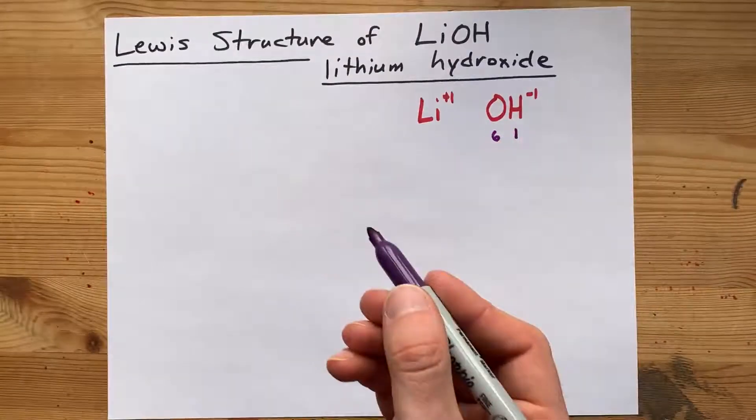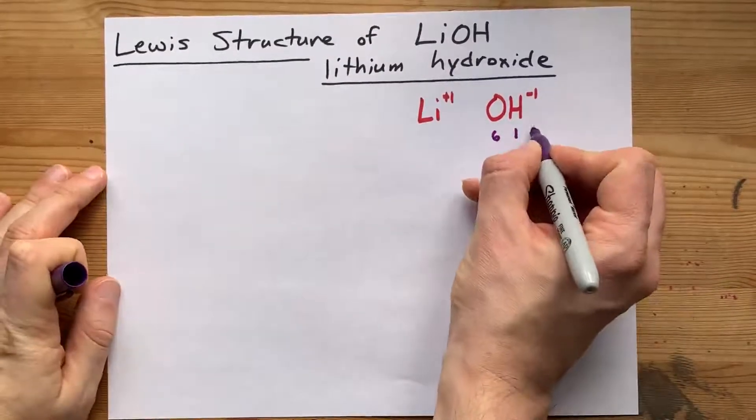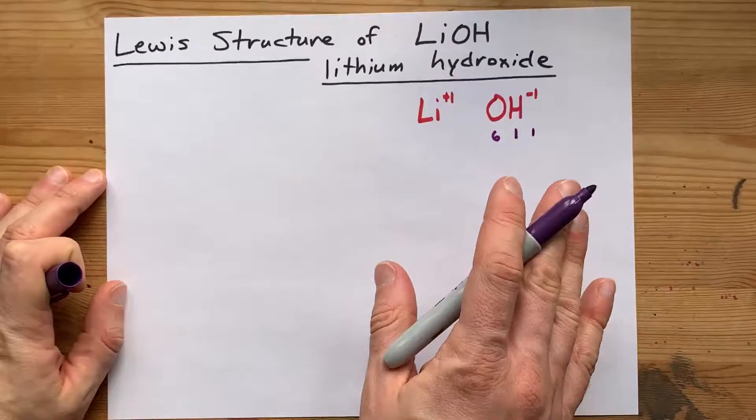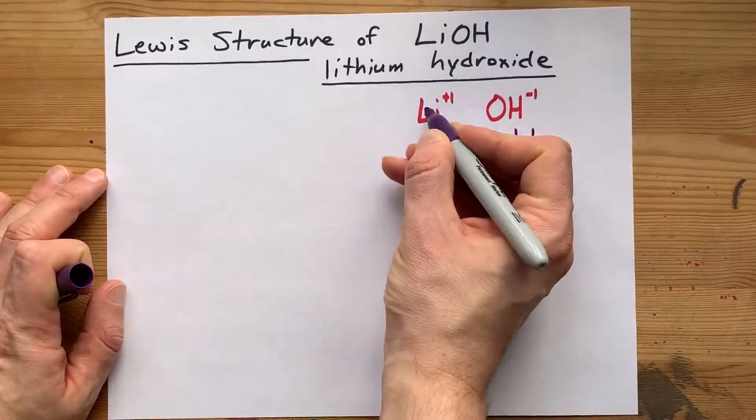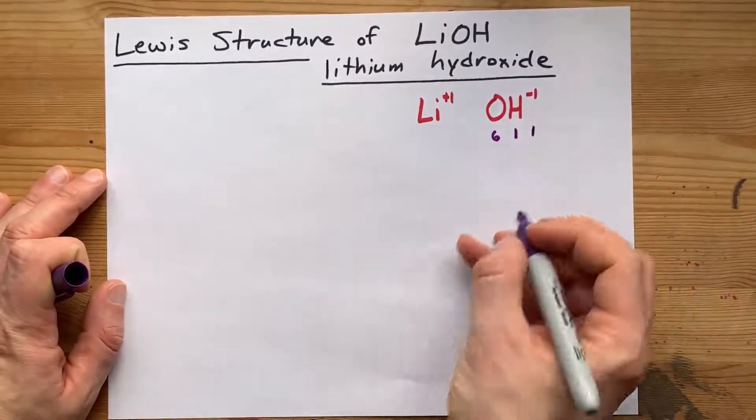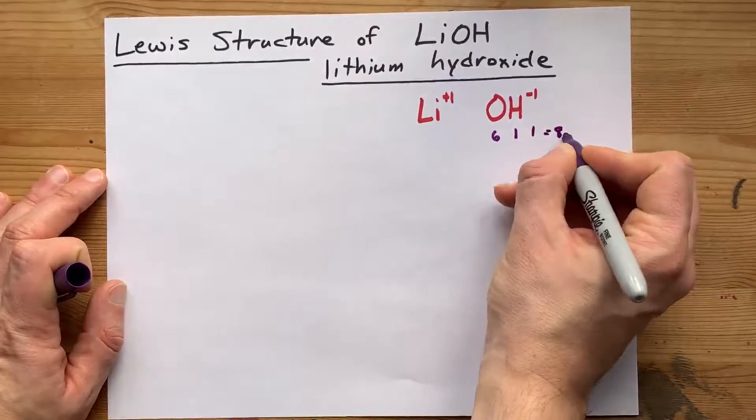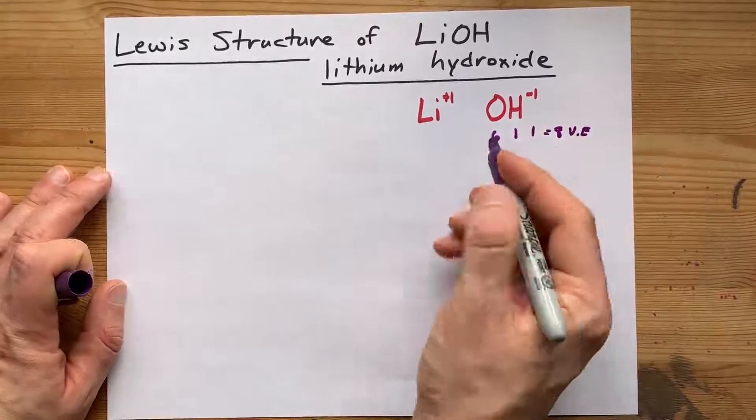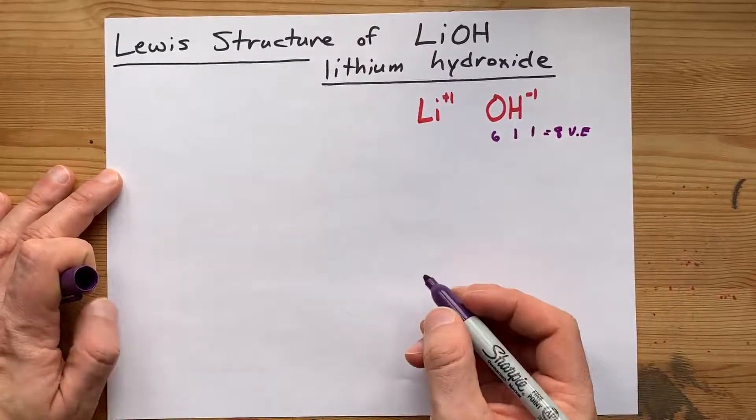And this minus one charge means that it has one extra electron compared to what you expect. Presumably, it got that electron from a lithium. But that's neither here nor there. This is eight valence electrons to deal with when you're drawing the Lewis structure for hydroxide.